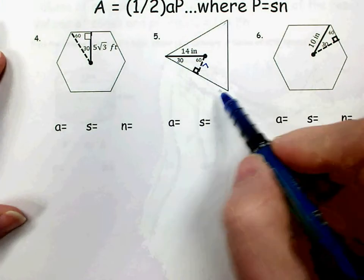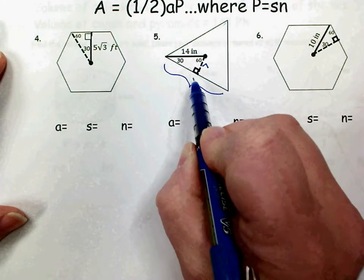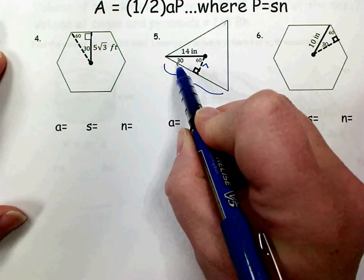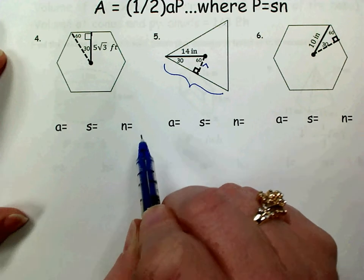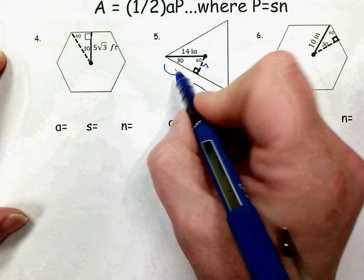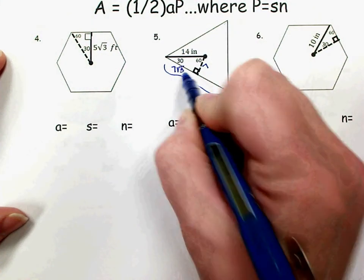So now I need my side length, which I can find half of it by going from short leg to long leg of the 30-60-90. To go from short leg to long leg, I multiply by the square root of 3. So it's just 7√3.